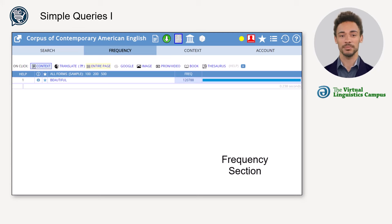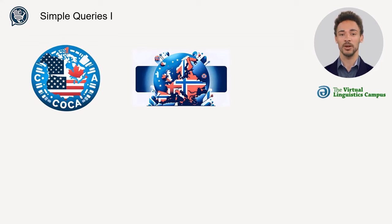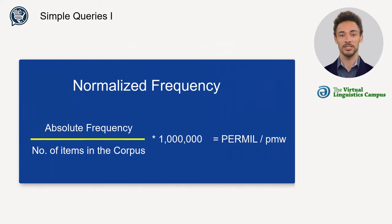Within one corpus, especially within one genre, it might be enough to look at the raw frequency. However, if you want to compare the frequencies of words across corpora or the sections of one corpus, it is necessary to look at the so-called normalized frequency — that is, the frequency of a word calculated to a basis of one million words, or in other words, the frequency you would expect if the corpus was one million words in size.